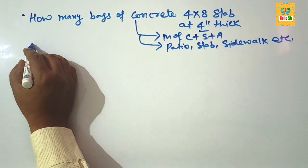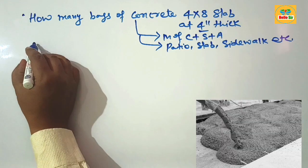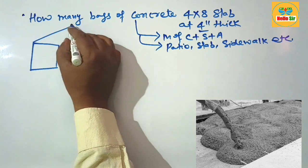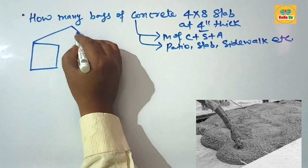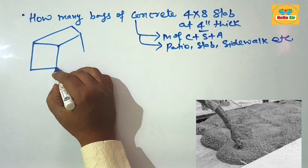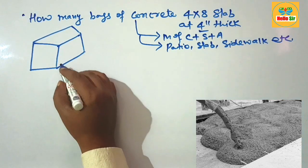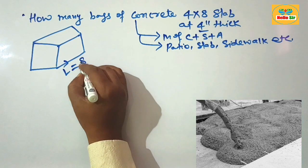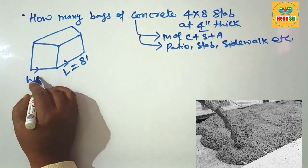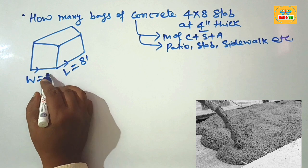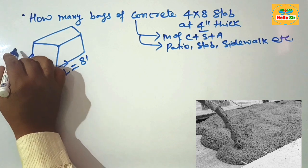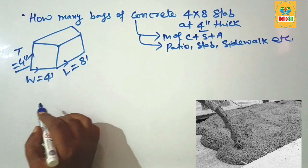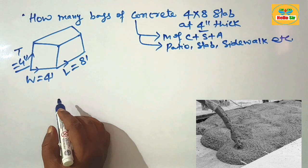Here we make a rough diagram to understand the different dimensions of this slab — the length, width, and thickness. In the diagram, the length is given as 8 feet, the width is given as 4 feet, and the depth is given as 4 inches. This is the length, width, and thickness of the 4 by 8 slab.